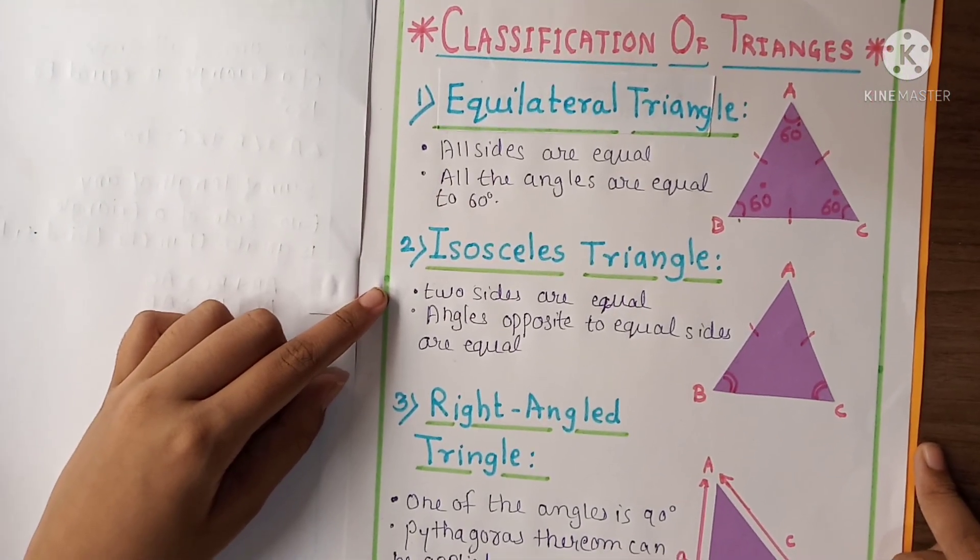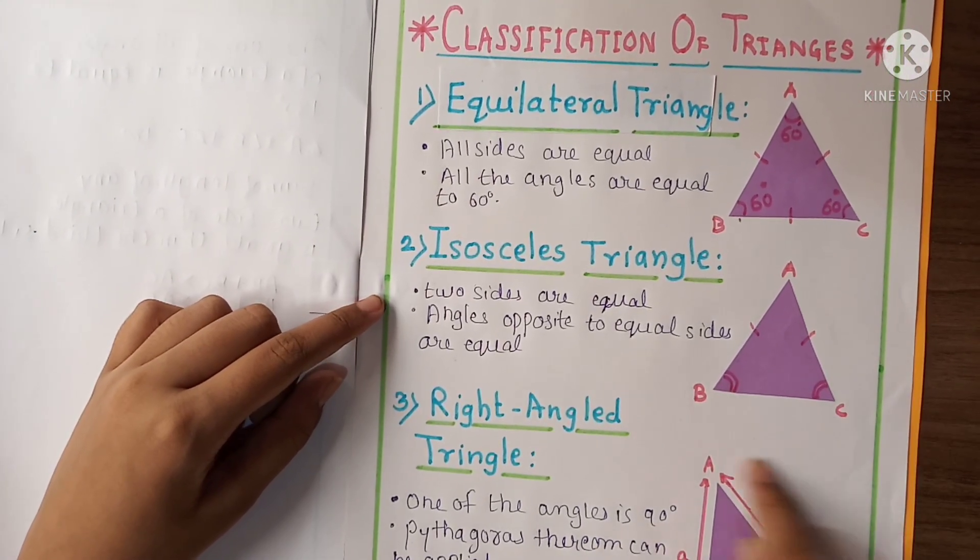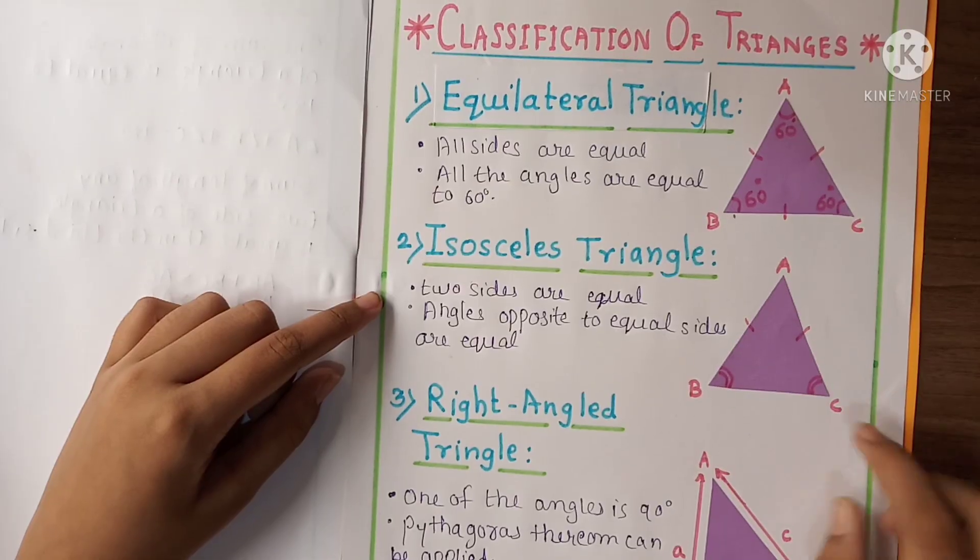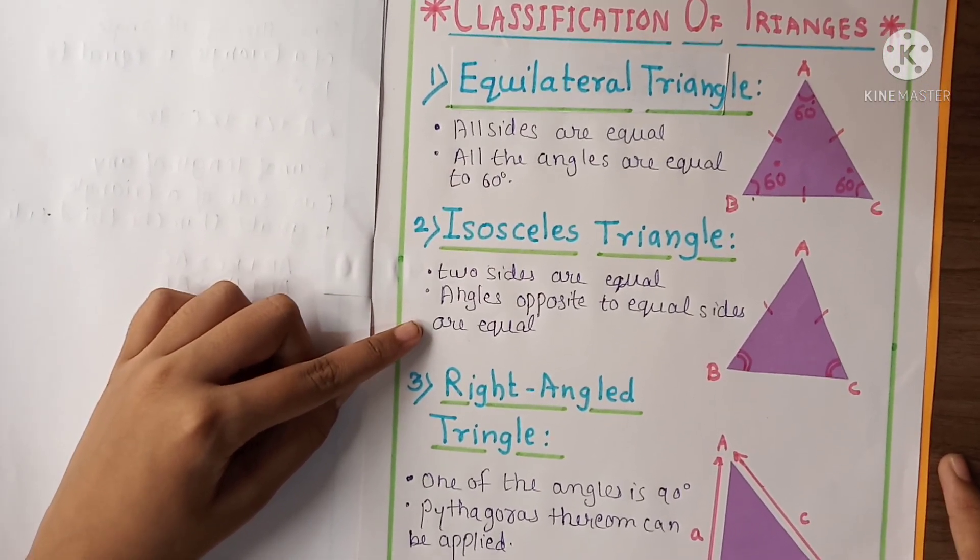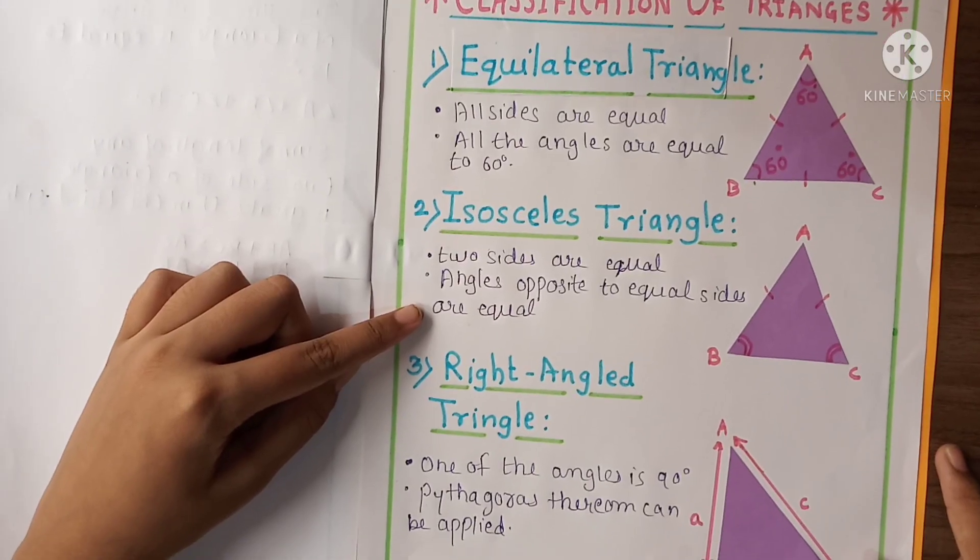Here is the second number isosceles triangle. Here is the diagram of isosceles triangle. Here two sides are equal. So let's see the first point. Two sides are equal. Second point: angles opposite to equal sides are equal.